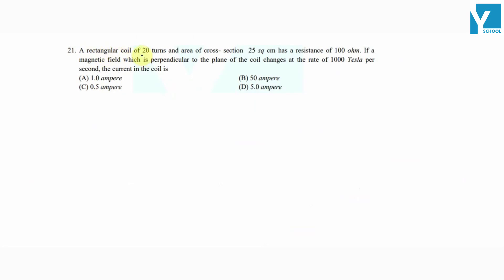A rectangular coil of 20 turns and cross-sectional area 25 square cm has a resistance of 100 ohms. If a magnetic field which is perpendicular to the plane of the coil changes at a rate of 1000 tesla per second, then the current in the coil is.